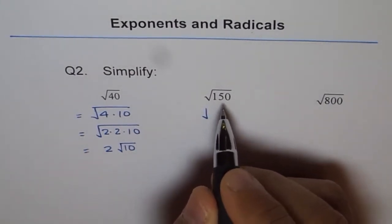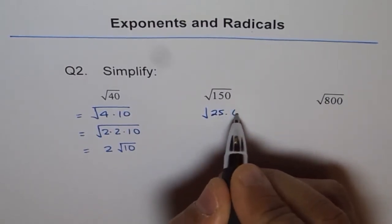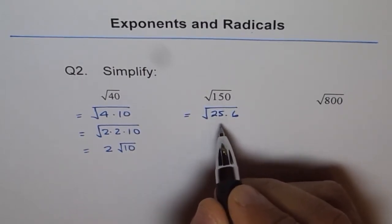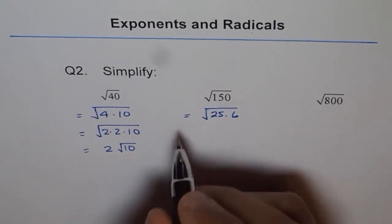Now square root of 150. You can divide this by 25, so we have 25 times 6. You know 25 times 4 is 100, and 150 is two more, so we get 25 times 6.